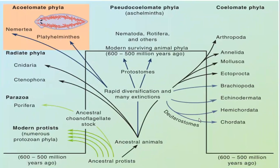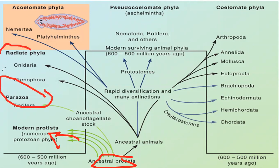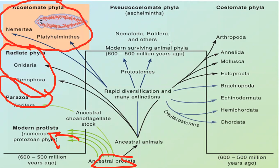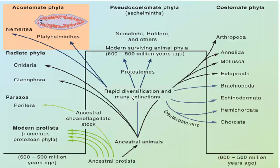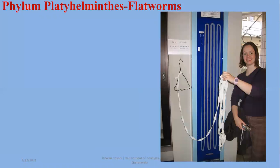We know that all animals have been developed from ancestral protists, and some modern protists have diversified from them. Having studied radiate phyla, we now move to the third group — the acoelomate phyla: Platyhelminthes, Nemertia, and Gastrotrica. These phyla also show diversification from ancestral animals that may have been diploblastic, radially symmetrical, or bilaterally symmetrical.